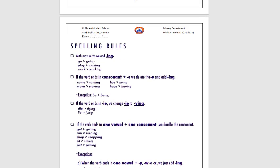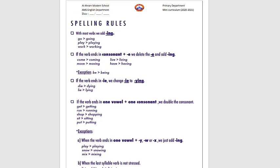Now open page 39 to check the spelling rules for adding ING. With most verbs, we just add ING: go — going, play — playing, work — working. If the verb ends in a consonant plus E, we delete the E and add ING: come — coming, move — moving, live — living, have — having. Exception: for 'be,' we add ING to get 'being.'